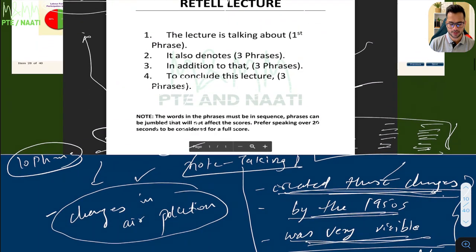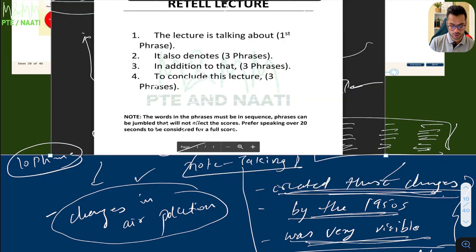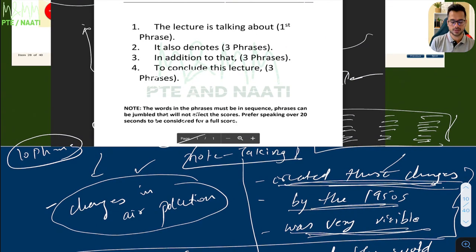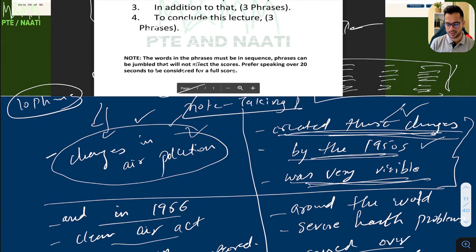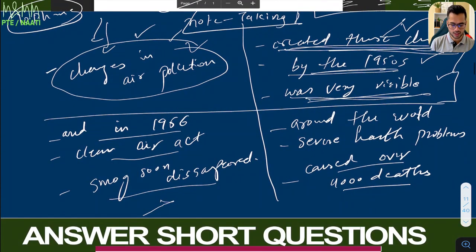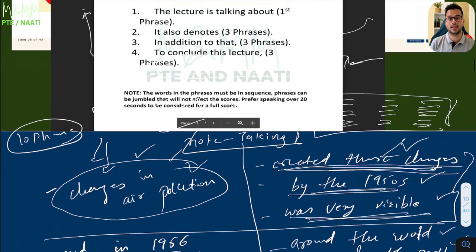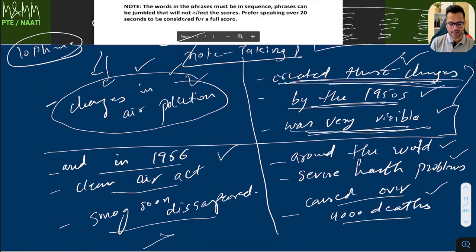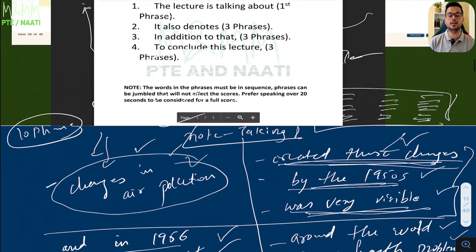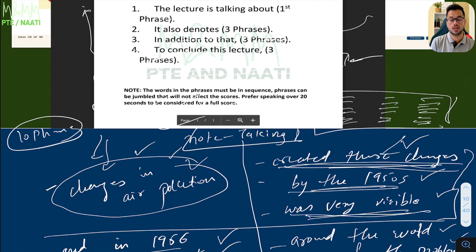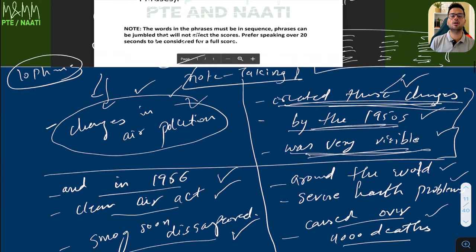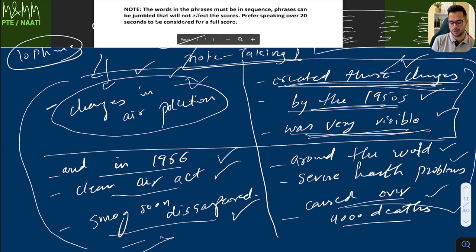Here's how the template works with the phrases: 'The lecture is talking about changes in air pollution. It also denotes created these changes by the 1950s was very visible. In addition to that, around the world, severe health problems caused over 4,000 deaths. To conclude this lecture, and in 1956, clean air act, smog soon disappeared was also mentioned.' I'm not trying to make perfect sense — I just speak my template with my content phrases. As long as you speak whatever you have written, you should be good.